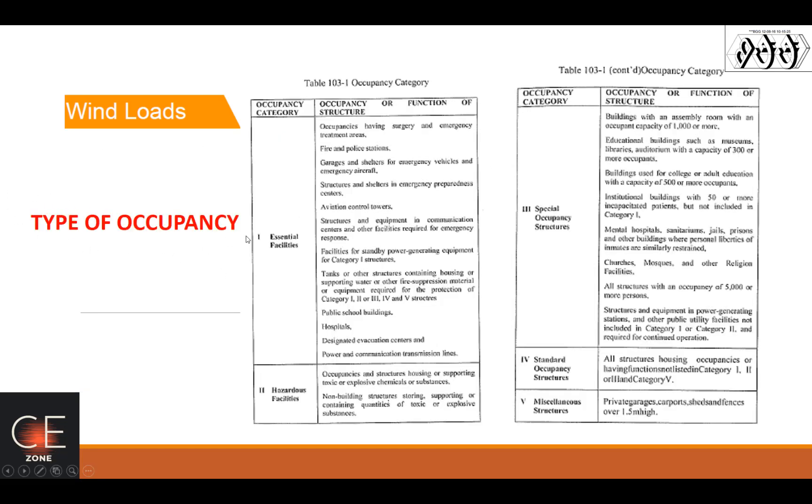So these are different types of occupancy. As I have mentioned a while ago, you have the essential facilities. Now simply put, all government facilities should be designed as essential facilities and they should be the last building standing. Because the factor for the importance factor here should be 1.5, meaning to say you're increasing 50% the base shear that you have computed. And then hazardous facilities 1.25, and then 3, 4, 5, that would be 1.